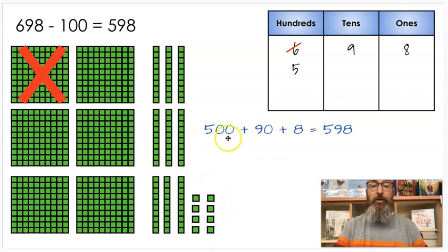So now my new answer would be 500 plus 90 plus 8, five hundred ninety-eight. So if I take away 100, I'm just taking away one from that hundreds spot. It makes 598. We want you to do this in your head. If I take away one hundred from 698, it just makes 598.